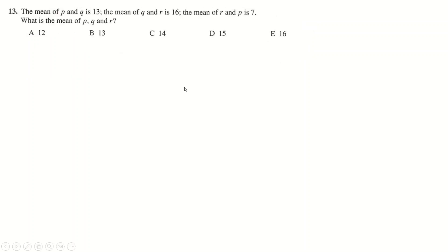Question number 13. The mean of P and Q is 13. So if I add those up and divide by 2, I get 13. Times both sides by 2 to get that. You can just do the same thing here. So instead of setting up this, just double this number. So Q plus R is 32. R plus P is 14. Now if I add up all of these things, I get 2P plus 2Q plus 2R. Divide everything by 2 to get that. The mean of P, Q, and R is P plus Q plus R all divided by 3. So let's just divide that by 3 and we get the answer of 12.